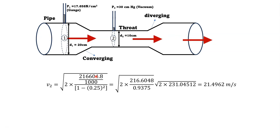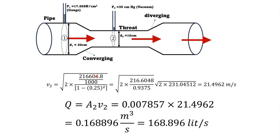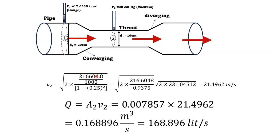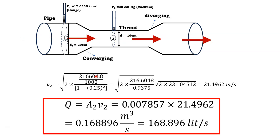The velocity at the throat is V2 = 21.4962 m/s. The theoretical discharge is Q = A2 × V2 = 0.007857 × 21.4962 = 0.168896 m³/s. Multiplying by Cd = 0.98 and converting: the volumetric flow rate through the Venturimeter is 168.896 liters per second. That is the answer for this problem.